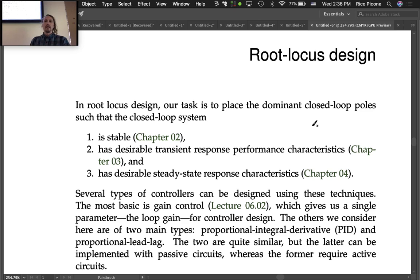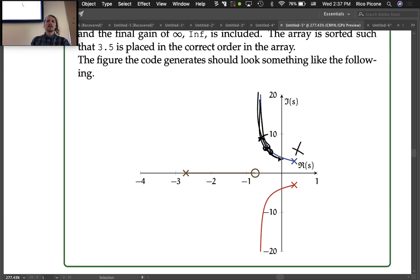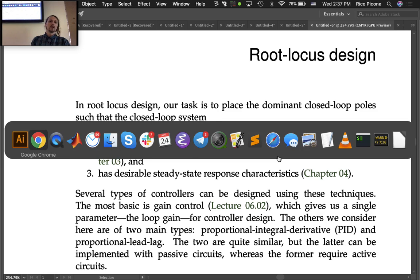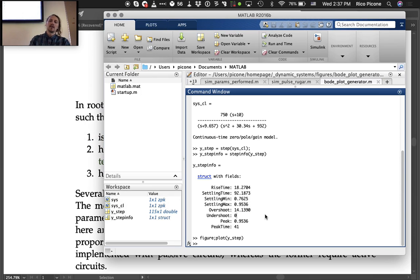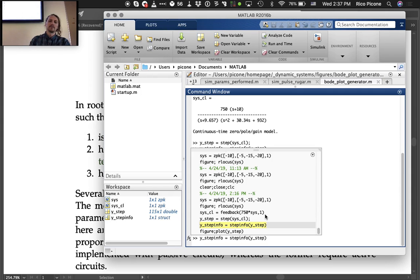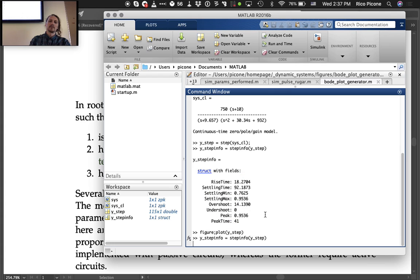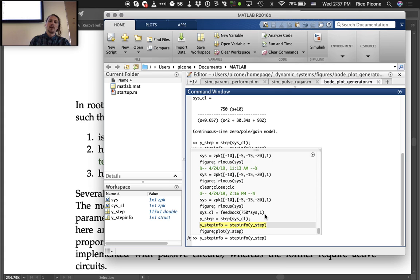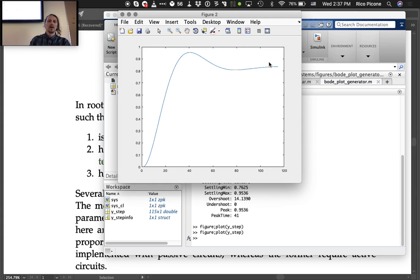And three, has desirable steady-state response characteristics. Did you notice that that little step response we did last time? Did you notice that this is not going to one? So we put our command at one—that's this unit step command at one—and it's going to like 0.85. So there's a steady state error there.